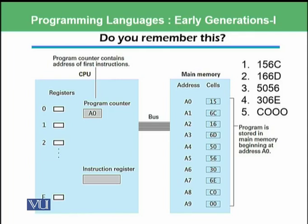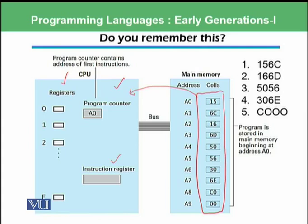So do you remember this from one of the previous modules where we discussed a system with a CPU that has registers, a program counter, and instruction registers, and all of the instructions are loaded in the RAM. So this is the program, and that program is then loaded into the CPU at appropriate places. This is the instruction we learned previously which was 156C, stored in two memory locations. And this instruction was saying that you need to load the content available at 6C memory location into register number 5.